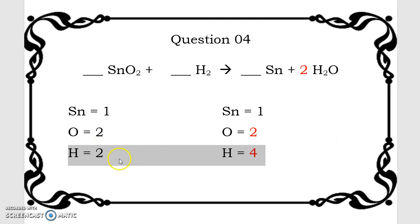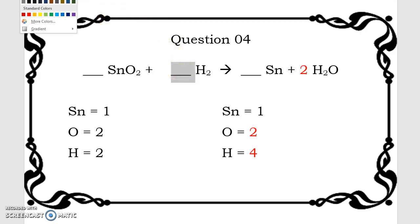So I have 2 oxygen atoms and 4 hydrogen atoms. I need to now balance my hydrogens. I have 2 on the reactant side, 4 on the product side. 2 times blank equals 4. Just like we said earlier, 2 times 2 equals 4.